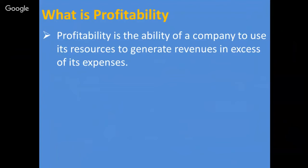مطلب یہ ہے کہ کوئی بھی company ہو، اگر وہ manufacturing میں ہے تو وہ کچھ چیزیں manufacture کر کے اس کی sale کرتے ہیں۔ تو جو چیزیں وہ market میں sale کرتے ہیں اس سے جو پیسے آتے ہیں اس کو revenues کہا جاتا ہے۔ اور جو product company market میں sale کر رہی ہے اس کے اوپر کچھ خرچے بھی ہوتے ہیں جس کو expenses بولتے ہیں۔ اگر revenues زیادہ ہیں expenses سے تو company profit میں ہے۔